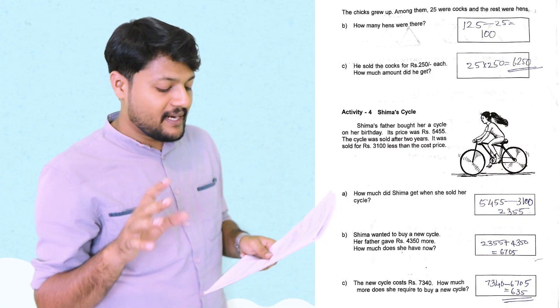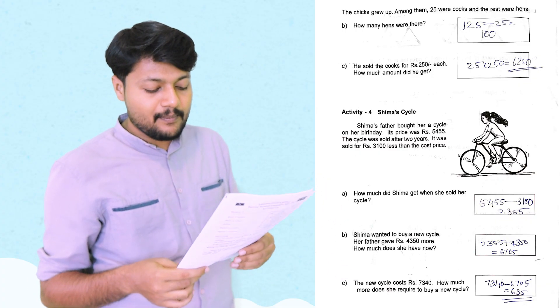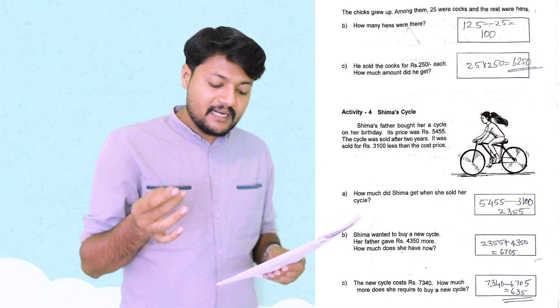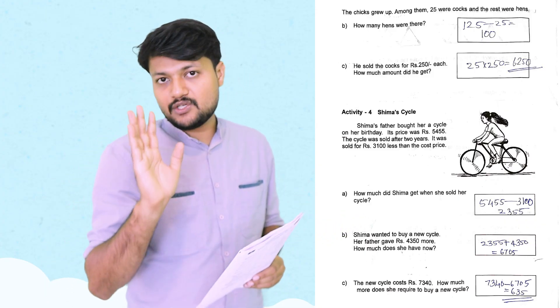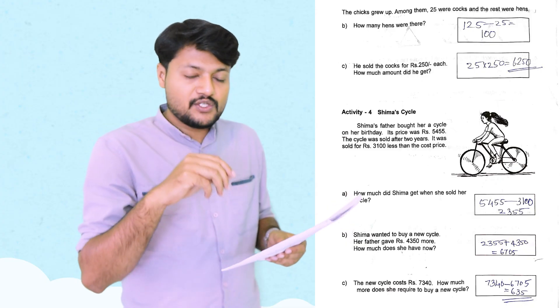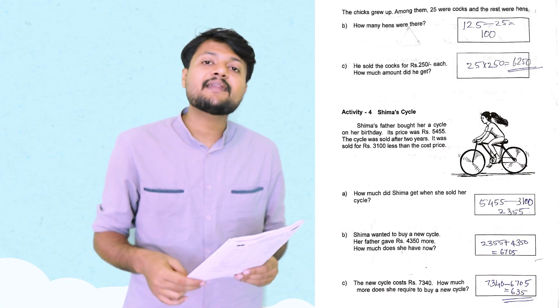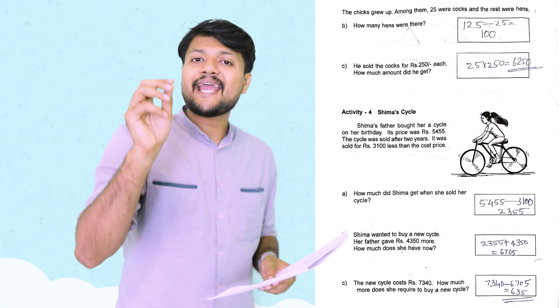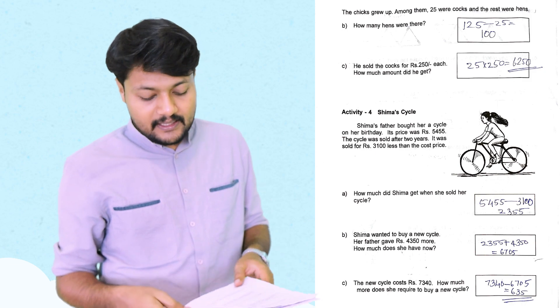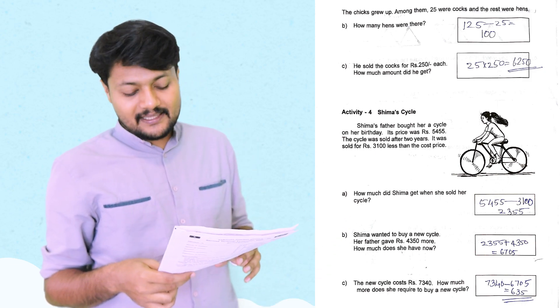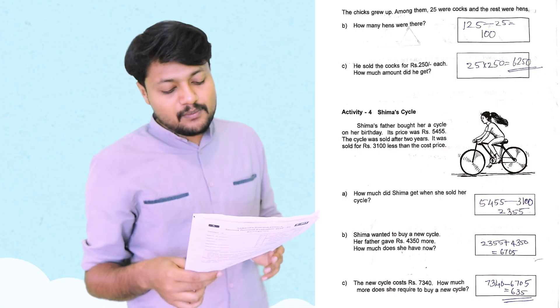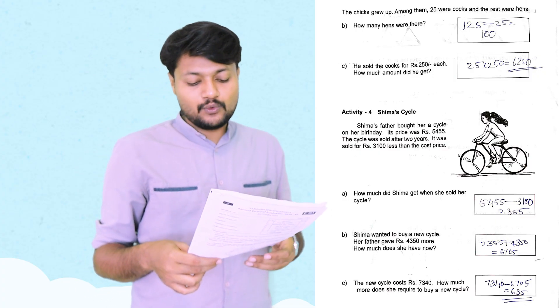Shima's number of Rs. 4,350. Father gave Rs. 4,350. Rs. 7,340. How much more does she require to buy a new cycle?